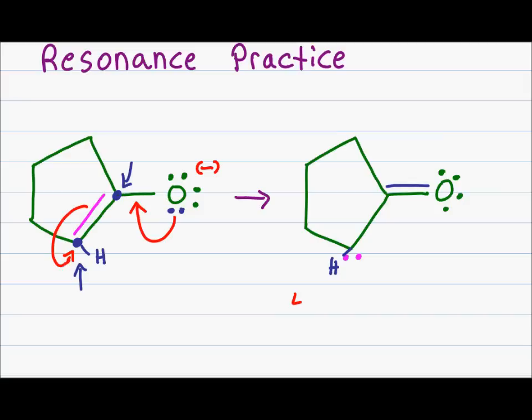Hydrogens don't move in a resonance structure, so I know there is still one hydrogen on the carbon holding the lone pair of electrons. A quick formal charge on this carbon: I should have four valence electrons; I have two electrons where carbon is bound to another carbon, one electron where carbon is bound to hydrogen, and two electrons from the lone pair, giving me five. Four minus five is negative one, so the negative charge from the oxygen was transferred to the carbon — no electrons were gained or lost.